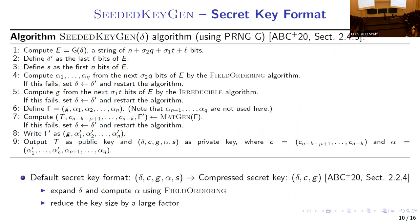Regarding secret key compression: the secret key format is (delta, c, g, alpha, s), where alpha is stored as control bits in a Benes network. Their key generation module computes s and alpha but does not use or generate the control bits, to save time and area. Therefore, the decapsulation module takes (delta, c, g) as input and restores s and alpha by rerunning the key generation module. This alternative approach — explicitly mentioned in the specification — trades memory for computation.